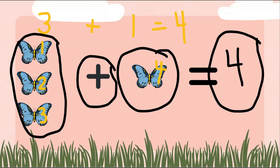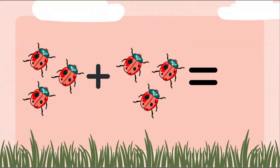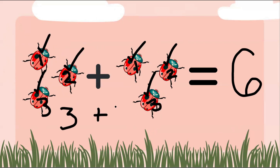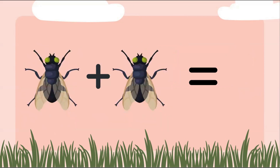Let's count this whole group of bugs: one, two, three, four, five, six — we have a total of six bugs. Let's find the number for each group. In this group we have one, two, three — so three bugs. Then we're going to add one, two, three more bugs. So three plus three gives us six.